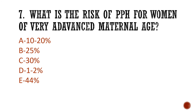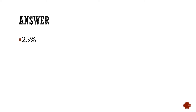Question 6/7: What is the risk of postpartum hemorrhage (PPH) for women of very advanced maternal age? Is it A) 10–20%, B) 25%, C) 30%, D) 1–2%, or E) 44%? The answer is 25%.